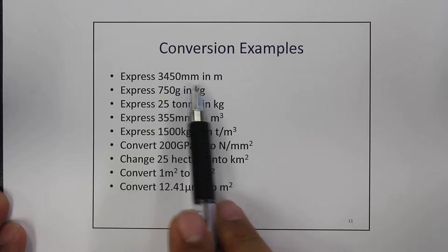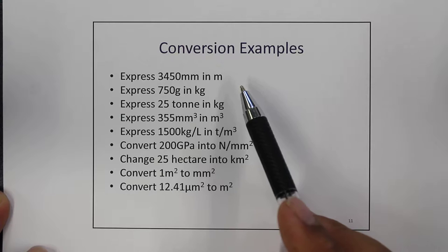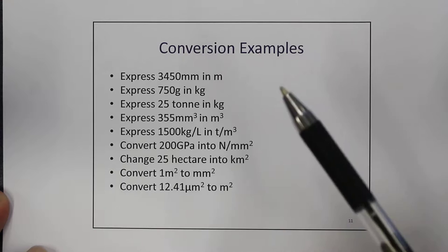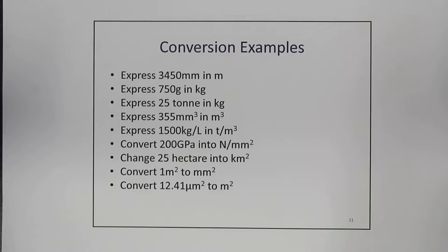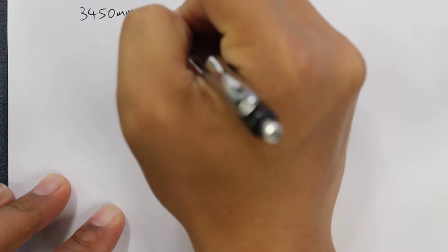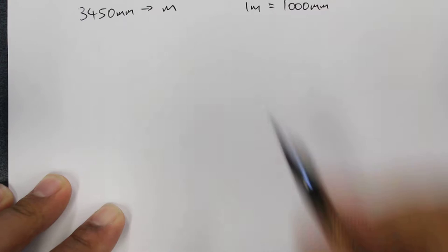So the first question we have here is changing 3450 millimeters and converting this into meters. The first thing that we need to know is the conversion between millimeters and meters. And that is that in one meter there is 1000 millimeters. So we want to change 3450 millimeters into meters. And we know that in one meter there is going to be 1000 millimeters.